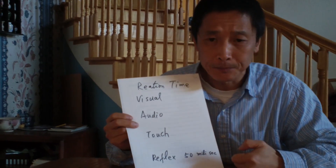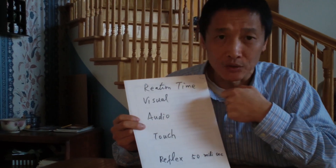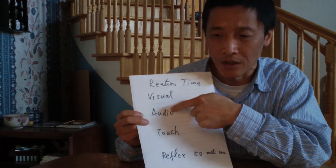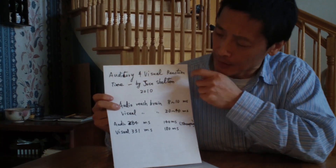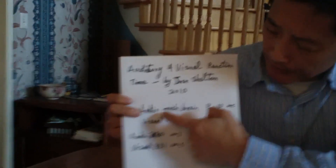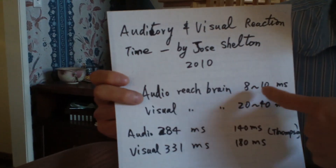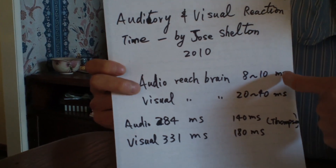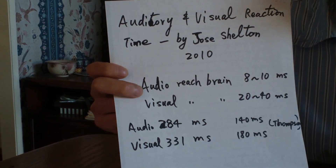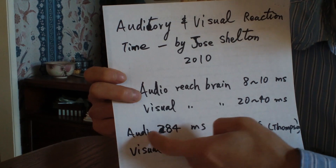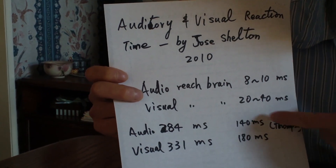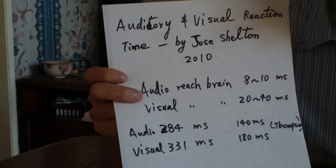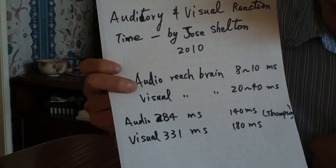For a normal person, you might think light is faster, but visual reaction is actually slower than audio. A 2010 research paper by Jose Shelton compared audio and video reaction time. When the signal reaches the brain, there's already a difference: audio takes 8 to 10 milliseconds versus video's 20 to 40 milliseconds. For whole reaction time, the audio test averaged 284 milliseconds versus video at 331 milliseconds. Another study by Thompson found 140 milliseconds for audio and 180 milliseconds for video.